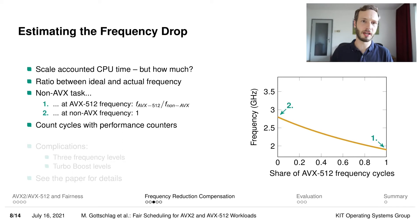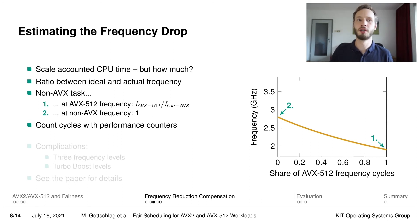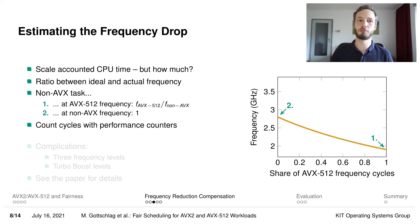If the same non-AVX task was actually always executed at high non-AVX frequencies, there would not have been any slowdown at all, so we do not want to scale the CPU time. In practice, we are usually going to be somewhere between those two points, depending on how much of the time slice was actually spent at reduced frequency levels. So we just use performance counters to determine the ratio of time at higher and lower frequency levels.